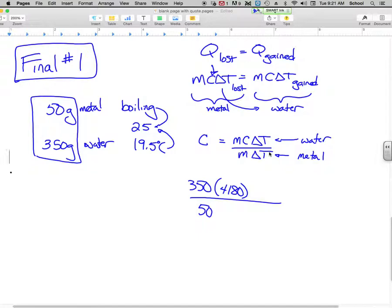And the delta T's again, the delta T's are how much it changed. So the metal went from boiling to 25. So boiling you supposed to know is 100 degrees centigrade. So if I go from 100 to 75, that was a change in temperature of the metal of 75. And then the water started off at 19.5 and heated up to 25. So that's a change of 5.5. So up here we're going to have 5.5. Down here we're going to have 75.